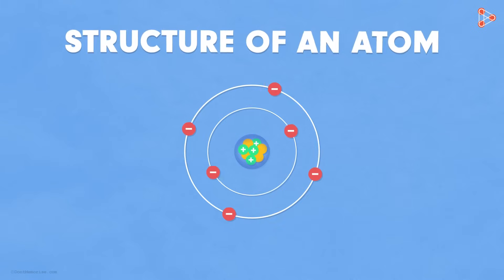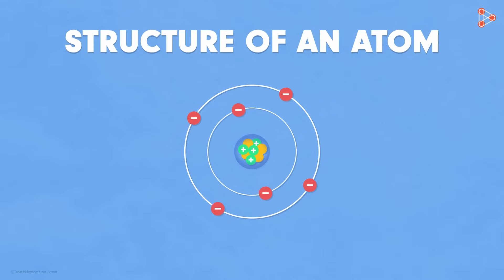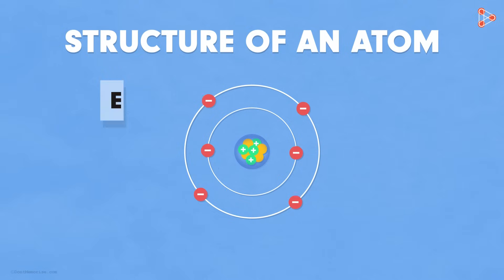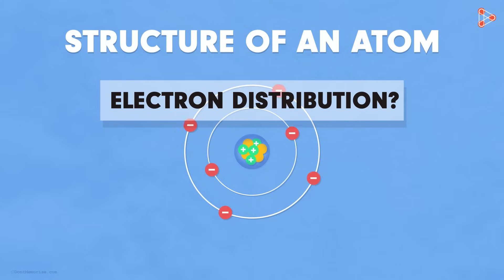Thus, now we have the complete design of an atom. In the center lies the nucleus having positively charged protons and neutral neutrons, while the negatively charged electrons revolve in fixed orbitals around the nucleus. But how exactly are the electrons distributed in the respective orbitals?